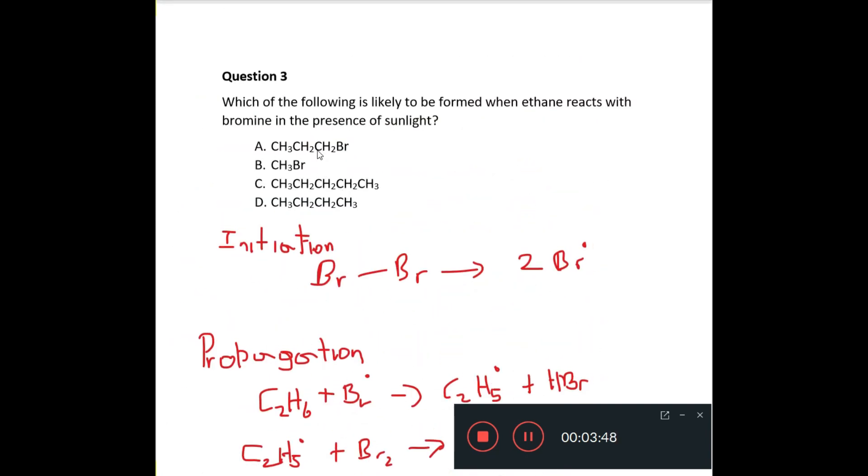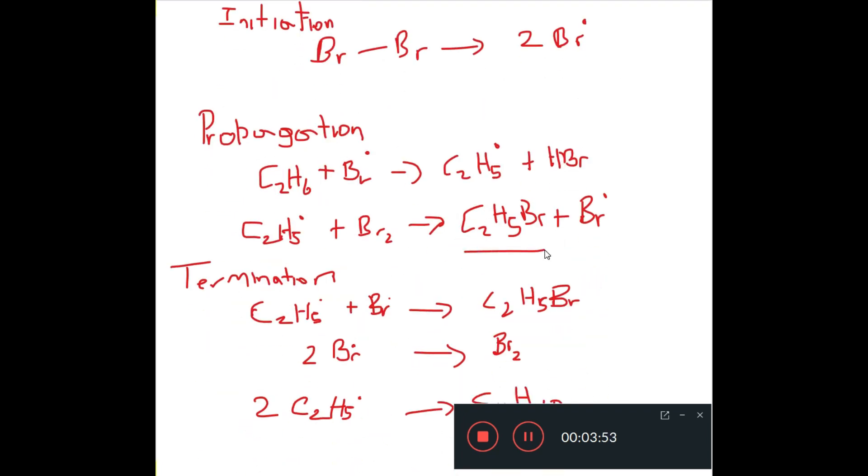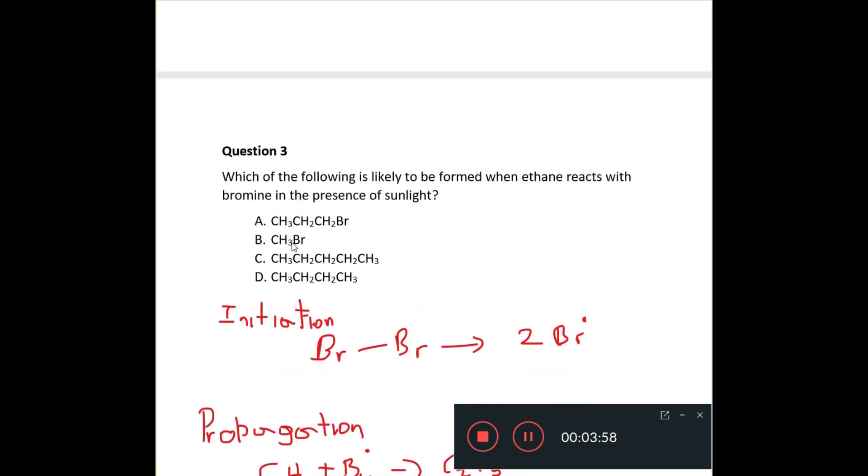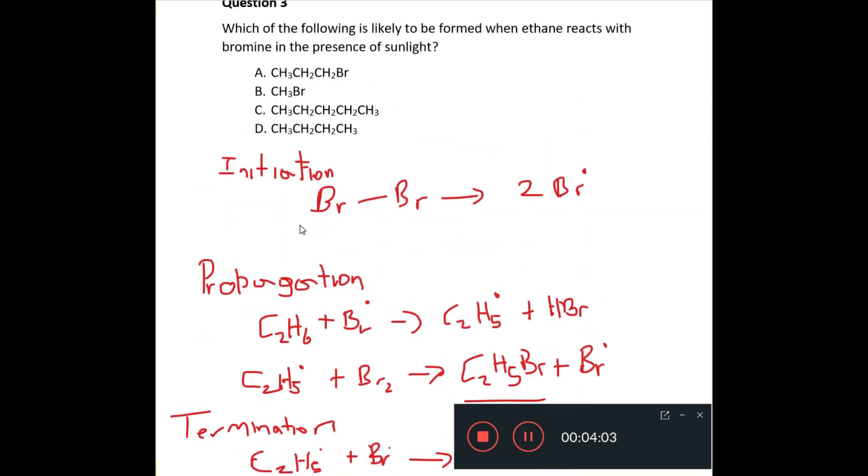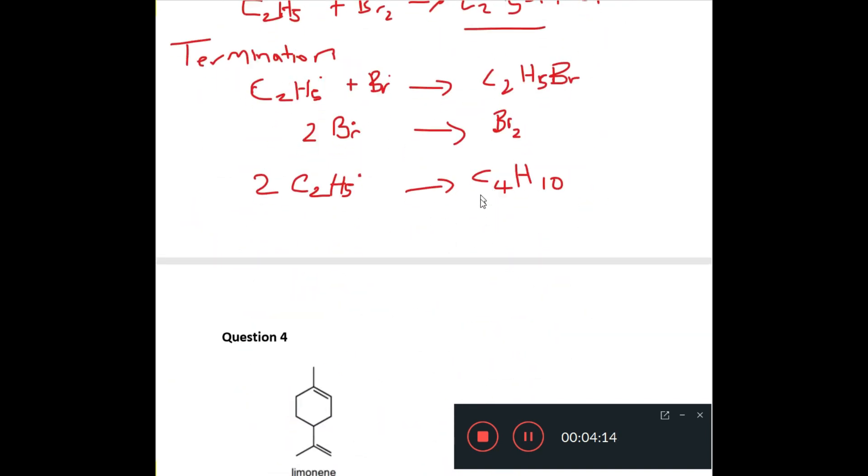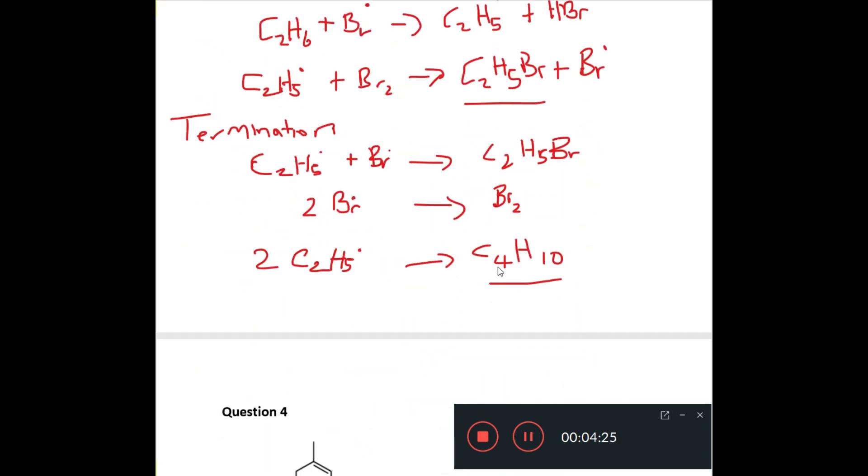Now if we look at the options we have here, we have C3H7Br. That's not going to be possible. This is the bromoalkane that you would produce C2H5Br. So that's out. CH3Br is very unlikely because you would have to break up the ethane molecule. So that's not it. And then C says C5H12. Now you're going to go as far as C4H10 here and that corresponds to D. So your answer is D. You can get C4H10.